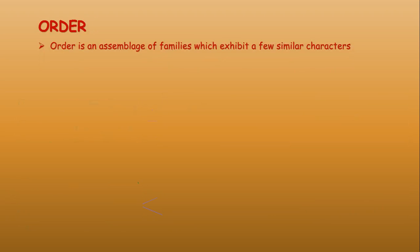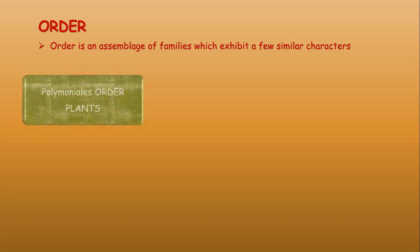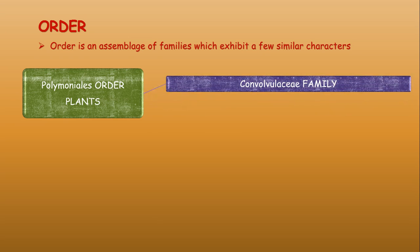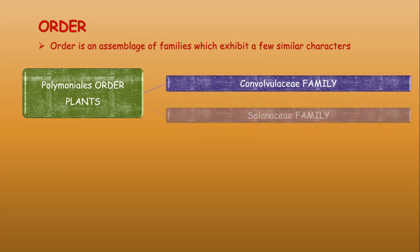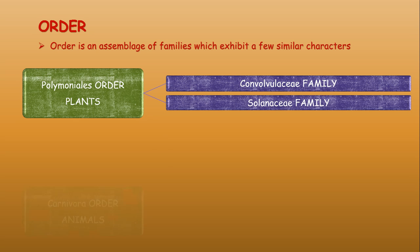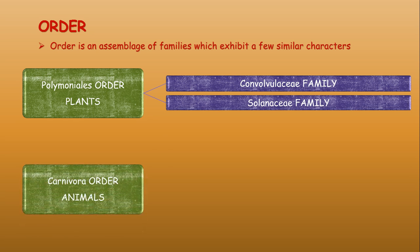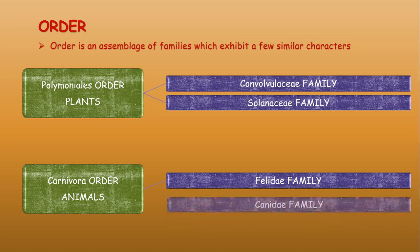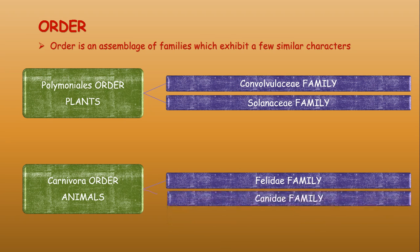Order is an assemblage of families that exhibit a few similar characters. For plants, an example is the Polemoniales order, which includes the Convolvulaceae family and the Solanaceae family. For animals, the Carnivora order includes the Felidae family and the Canidae family.